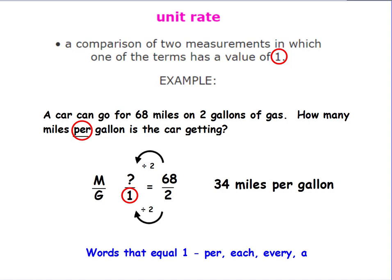Here's an example. A car can go 68 miles on two gallons of gas. How many miles per gallon is the car getting? I can see that what it's comparing here is miles, and that's also what I'm asking the question mark for. And then per gallon is the same as one, so here I put the one on the bottom.